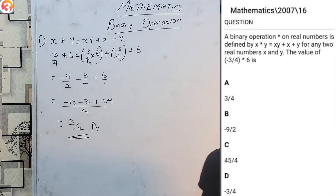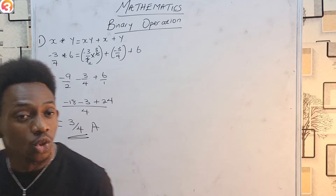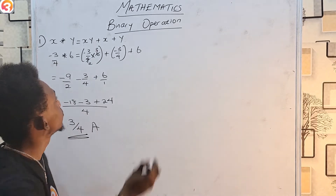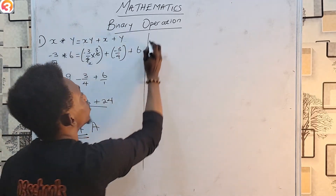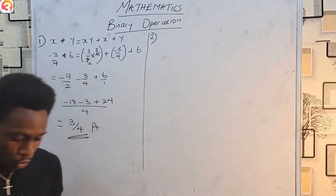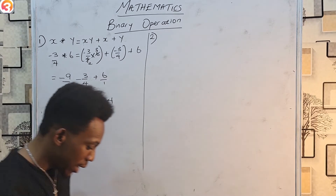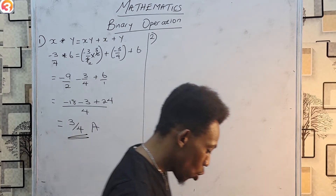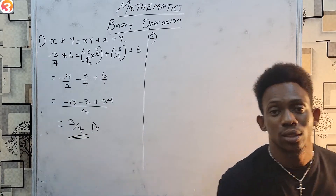That gives 3/4, and obviously that is option A. As you can see, this is very very easy — there's no stress here whatsoever. Moving on, let's attempt the second question, this time from 2006.